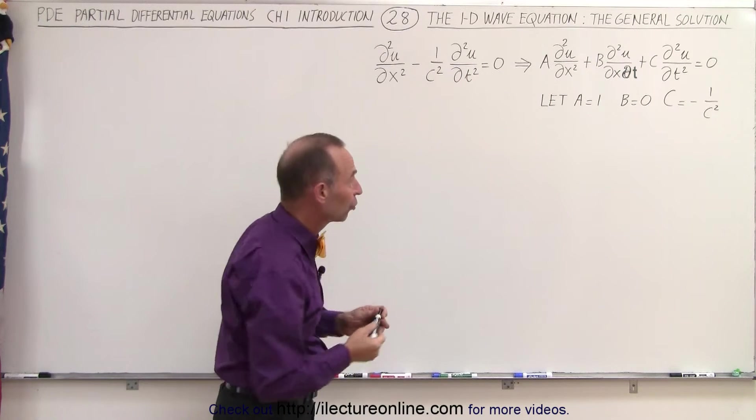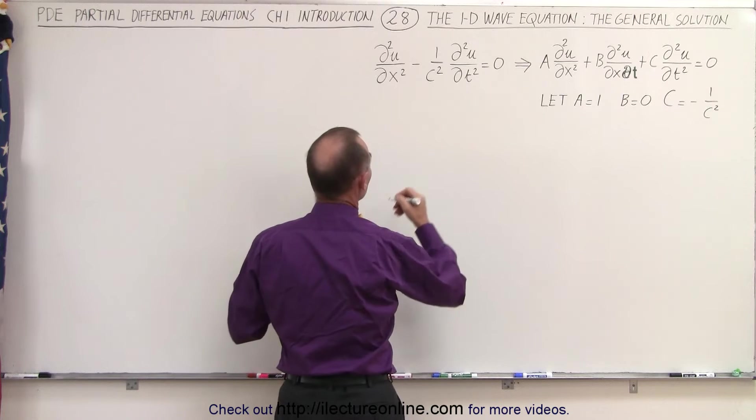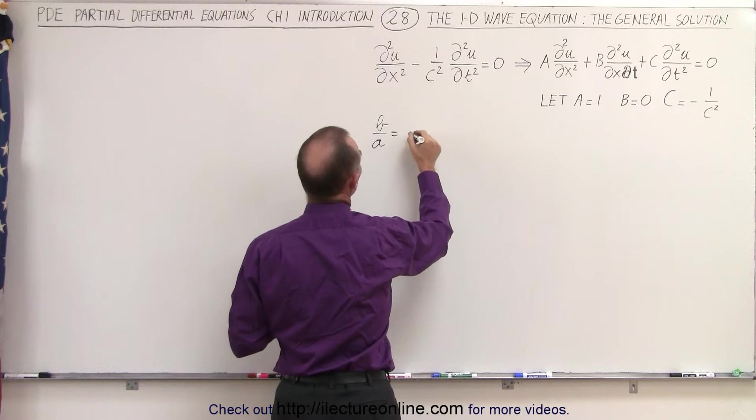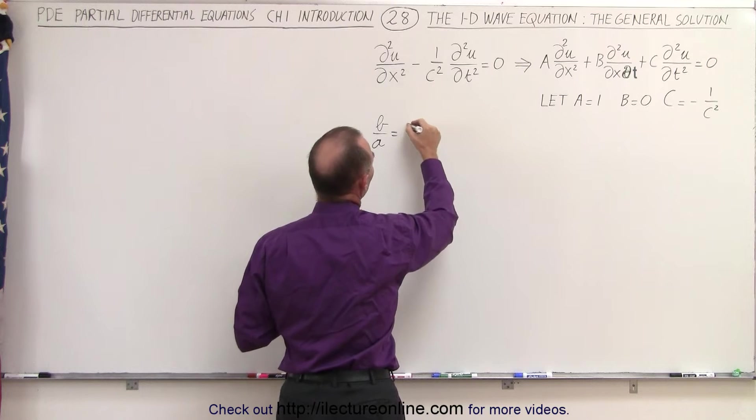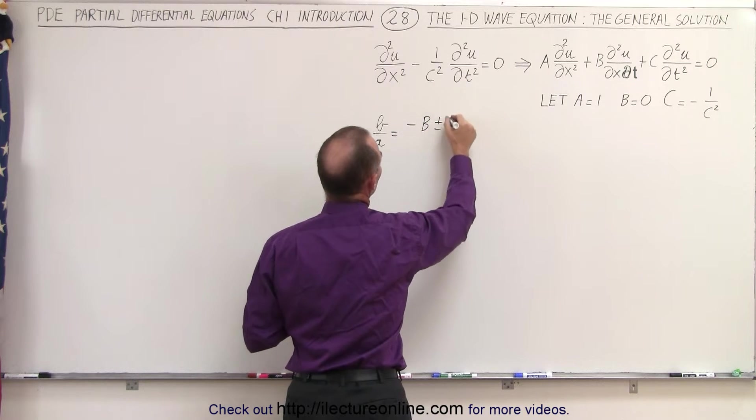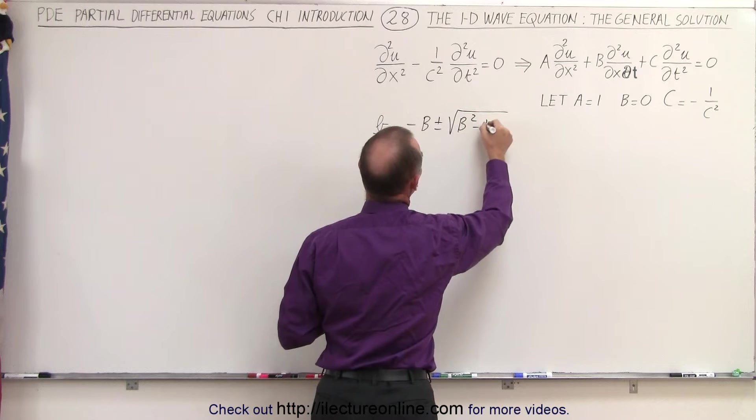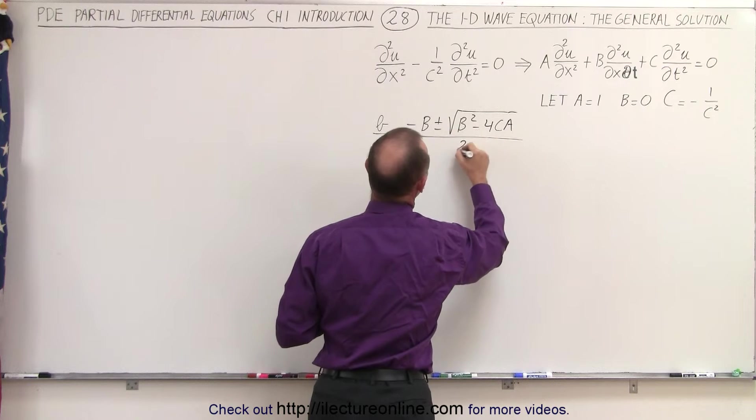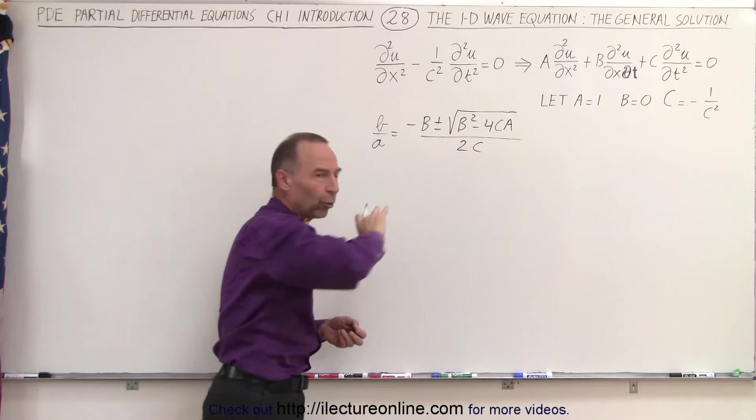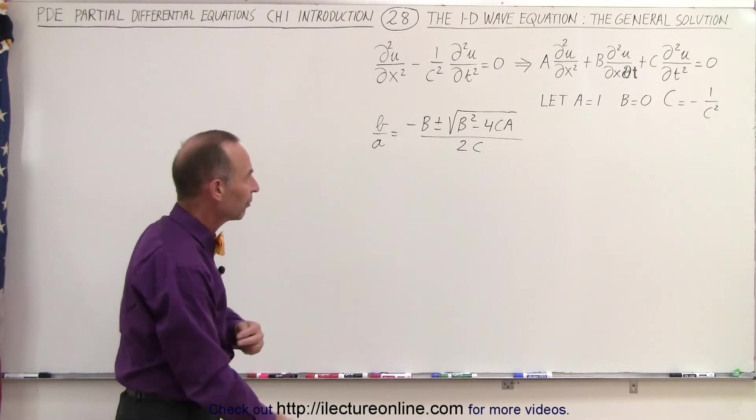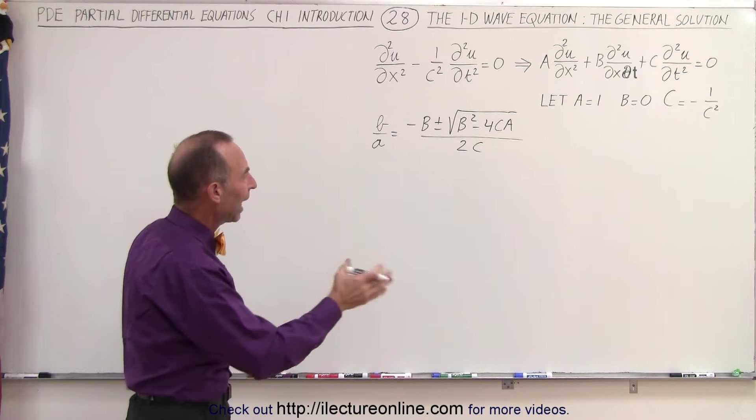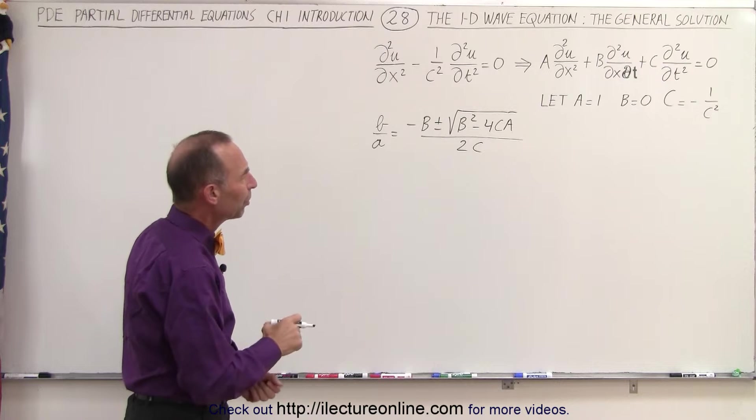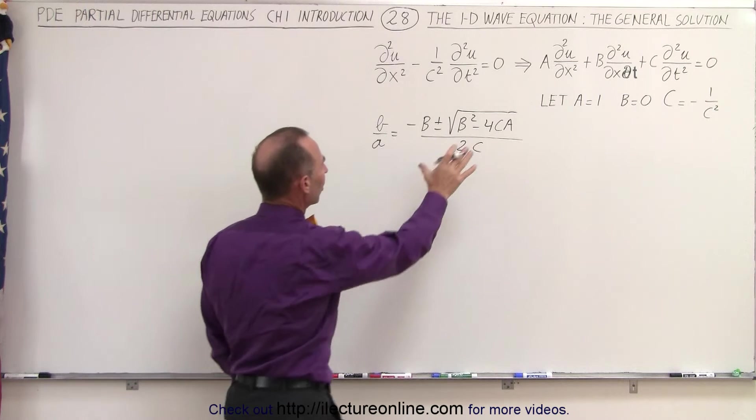To find the general solution, we need to find the solution to the equation b over a is equal to minus b plus and minus the square root of b squared minus 4c times a, all divided by 2c, remembering that the square term of that general quadratic equation had a c in it instead of an a. Let's plug in what we have and solve for this equation.